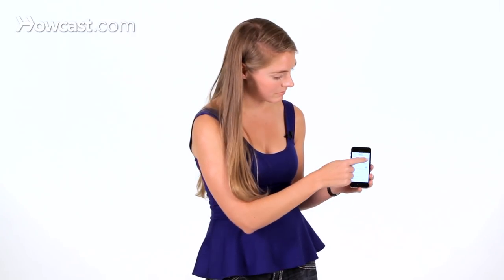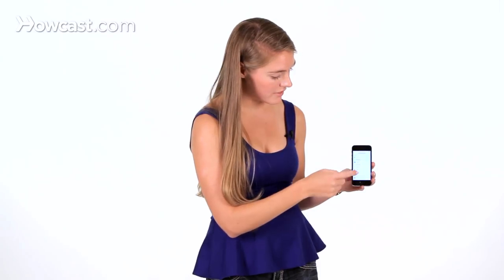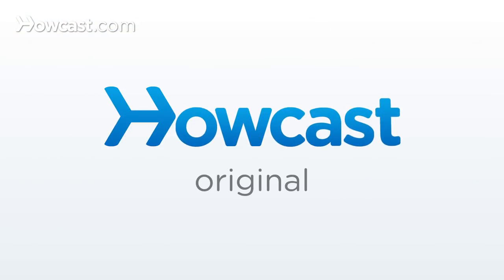and now when I get a text message, it won't show up on the lock screen. I will have to unlock the phone to see it. You can do that with any of the apps that are here, and that's how you can customize what shows up on your lock screen.